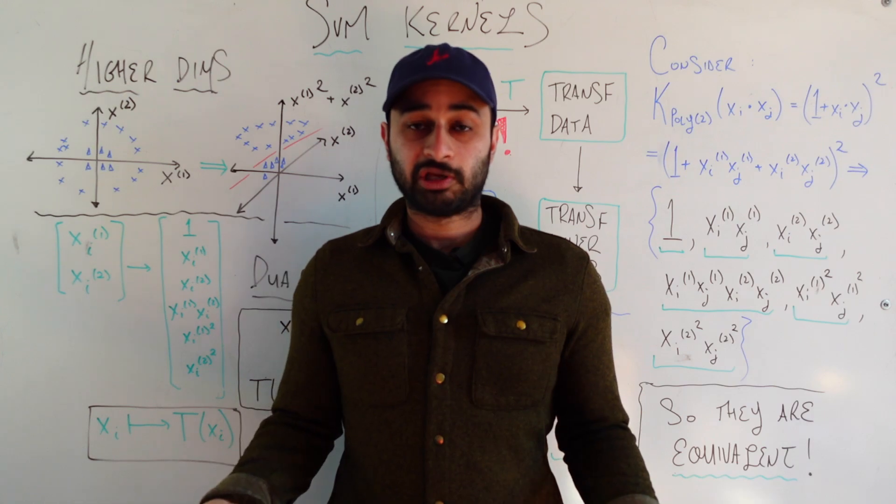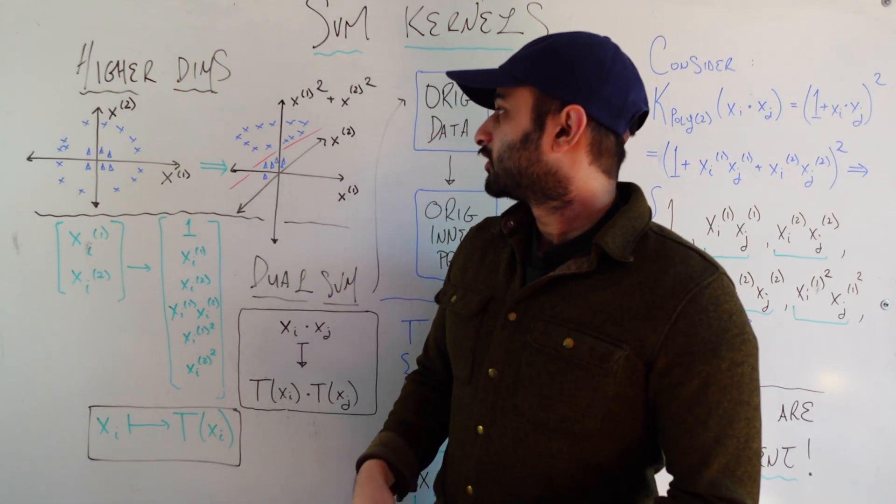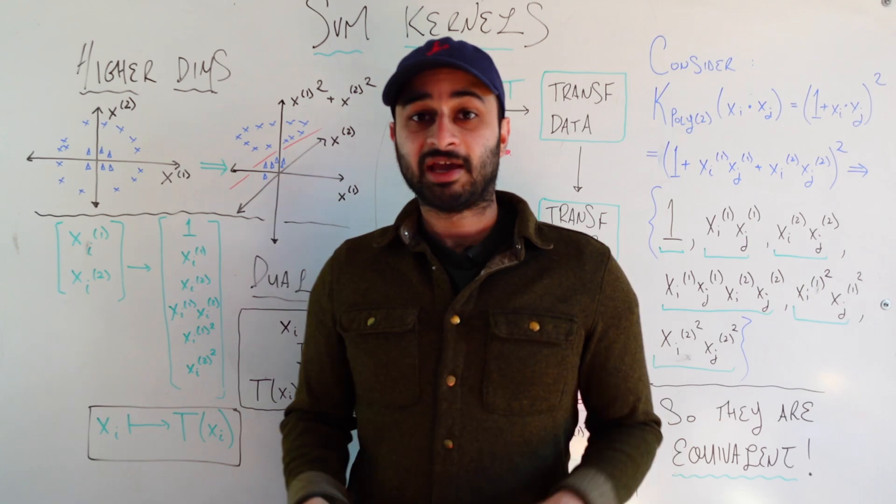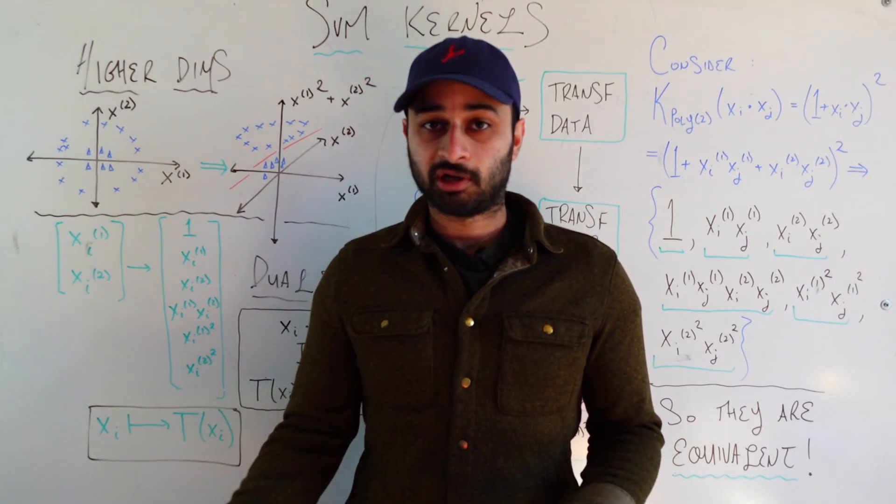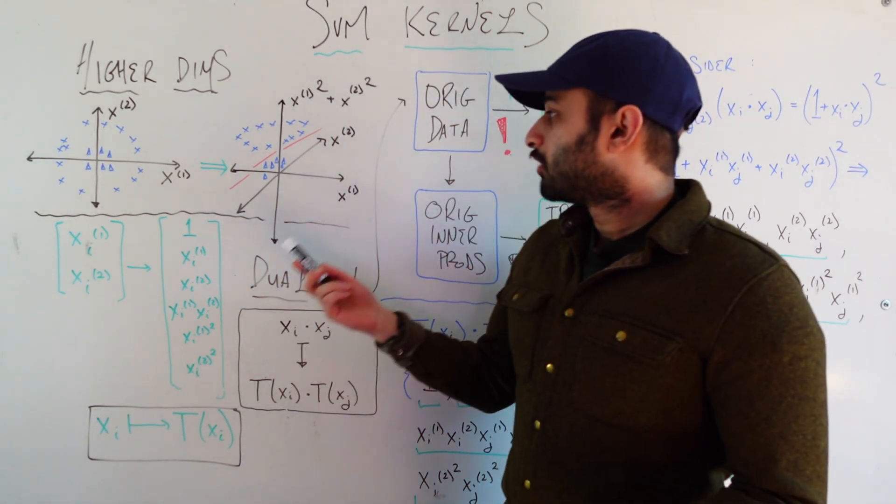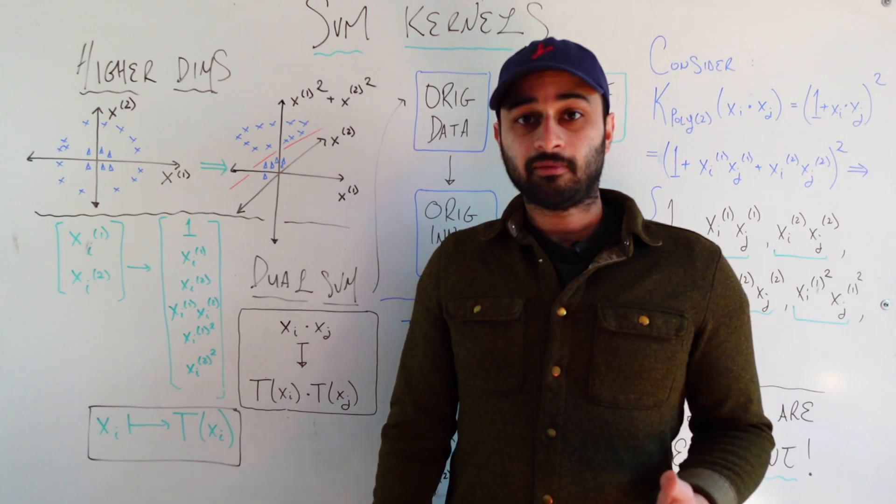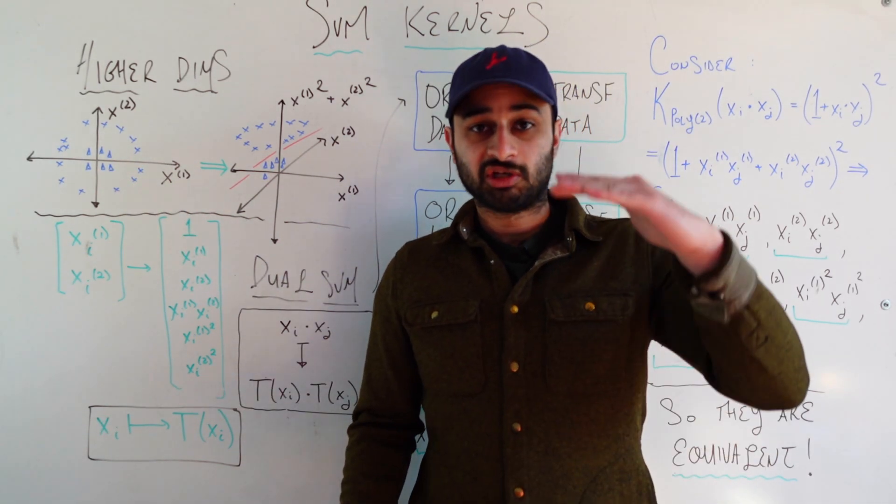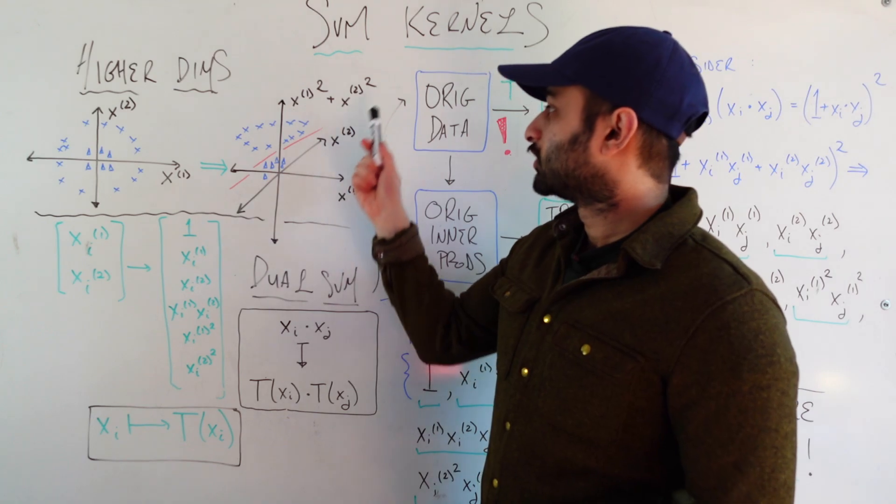But let's see if there's something simple we can do using the existing data. We will engineer a new feature based on the existing ones. Specifically, that new feature will be x1 squared plus x2 squared. So we can represent this now as three dimensional data. The first two dimensions are the same, the third dimension is that new feature we constructed.